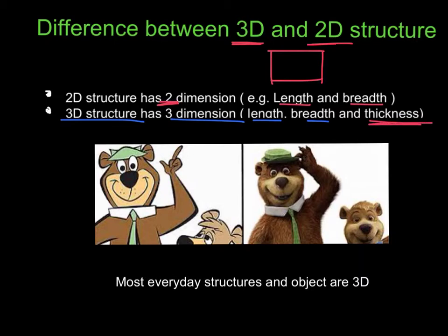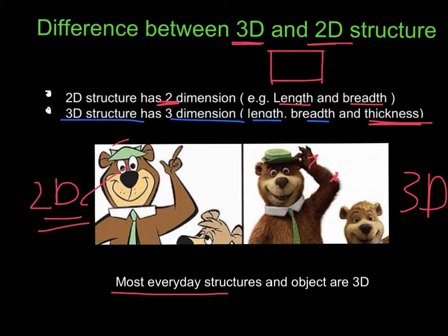This would be, for example, 2D Yogi Bear right here - it has length and breadth, or two dimensions. Whereas in this case, this is 3D Yogi - you can see it's going to have some thickness as well. It looks more realistic, because most everyday structures and objects are 3D.